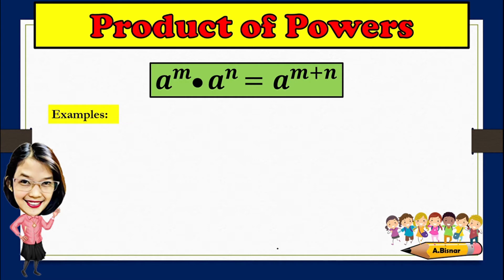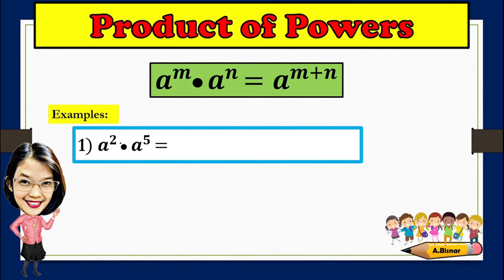Let us start with product of powers. You need to remember that a raised to m times a raised to n is equivalent to a raised to m plus n, which means that you can only add the exponents if the bases are the same. For example, a squared times a raised to the fifth power. Since the bases are the same, which is a, let's simply add its exponents, which are 2 and 5. 2 plus 5 is 7, so the answer is a to the seventh power.